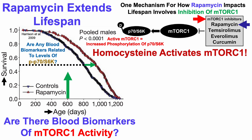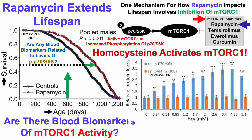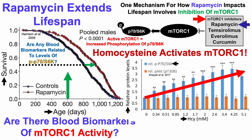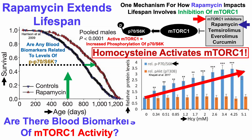And there is — homocysteine. Homocysteine activates mTORC1, and that's what we can see here. On the y-axis, we've got relative protein levels of phosphorylated P70S6K plotted against homocysteine concentration on the x-axis. As the levels of homocysteine increase, we can see relatively higher levels of phosphorylated P70S6K. In other words, homocysteine activates mTORC1.